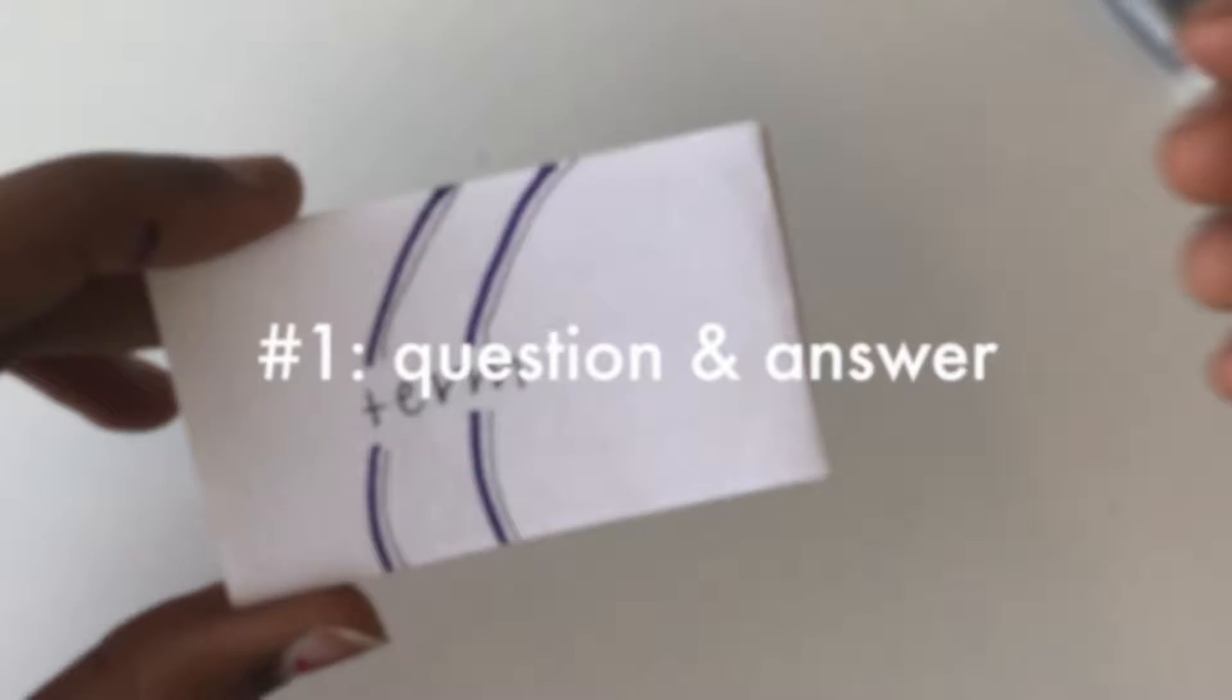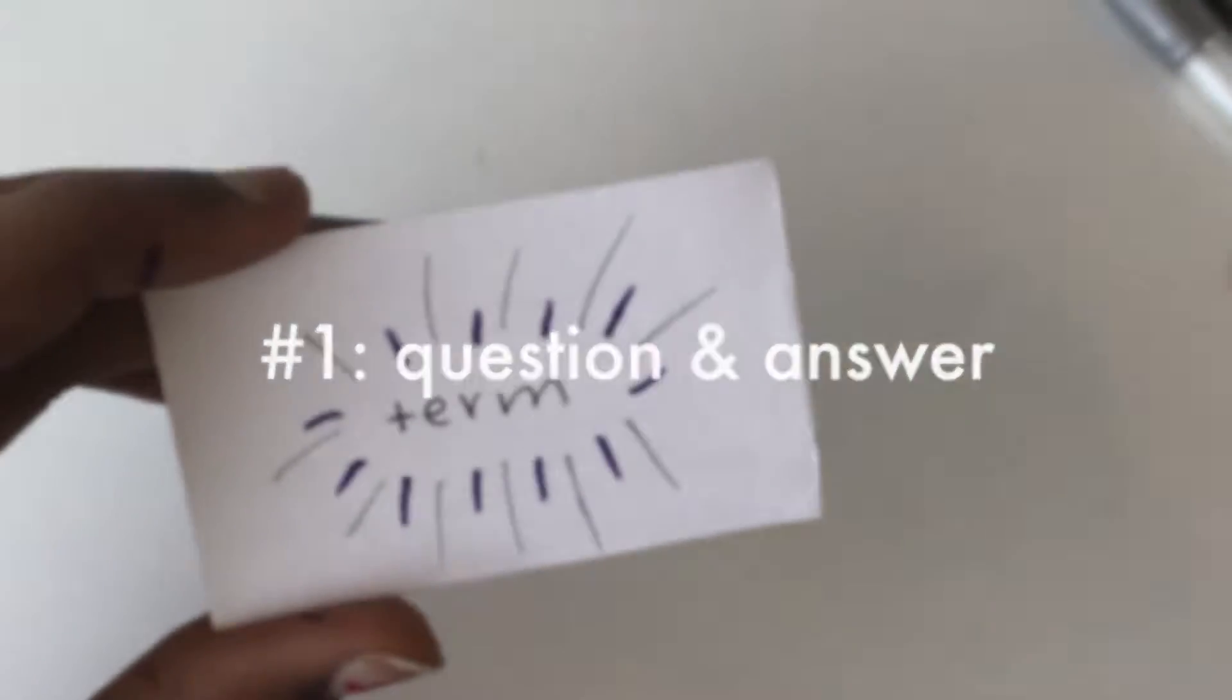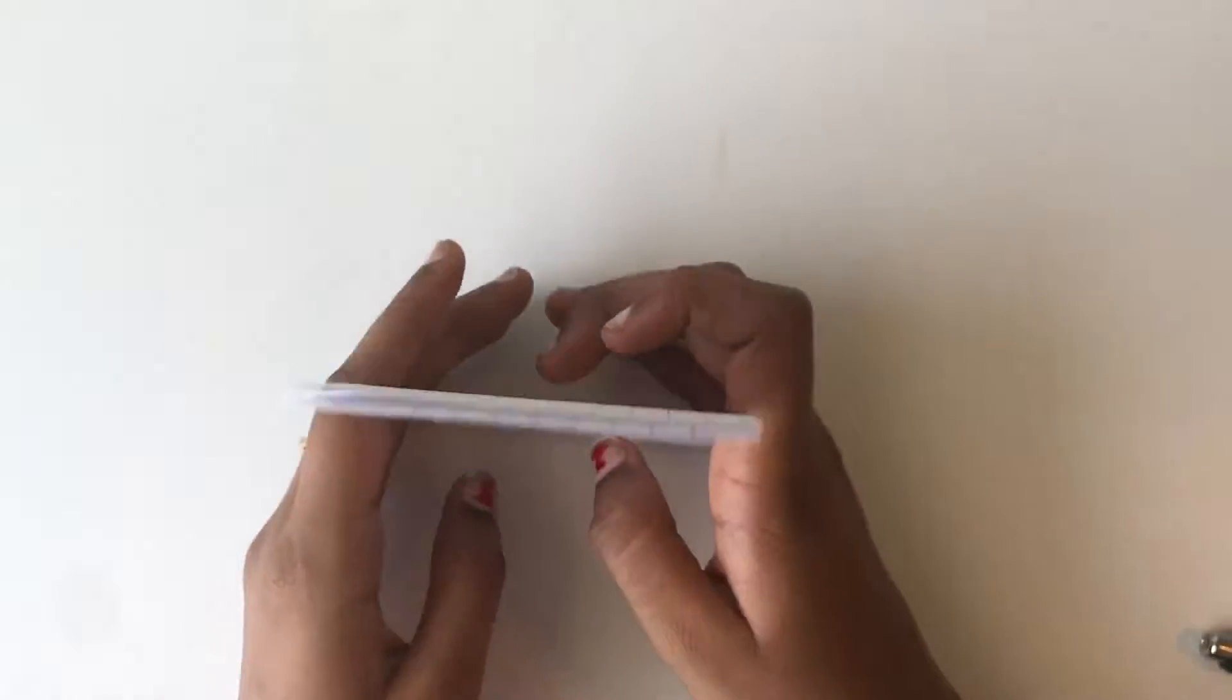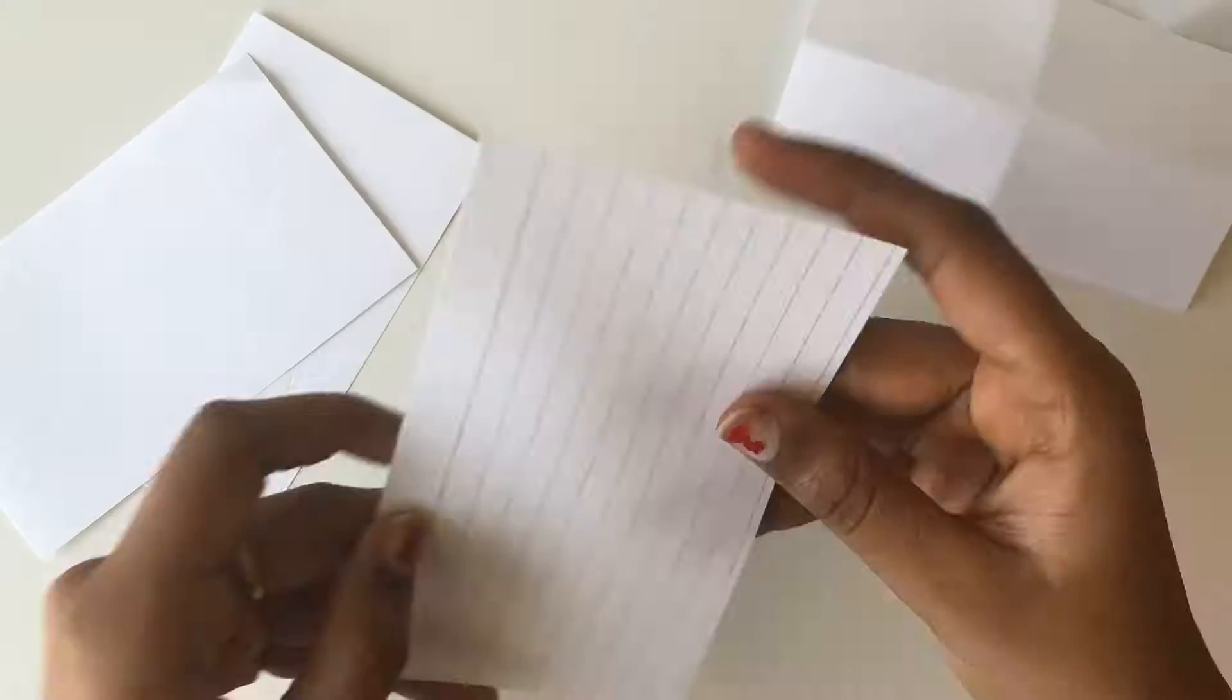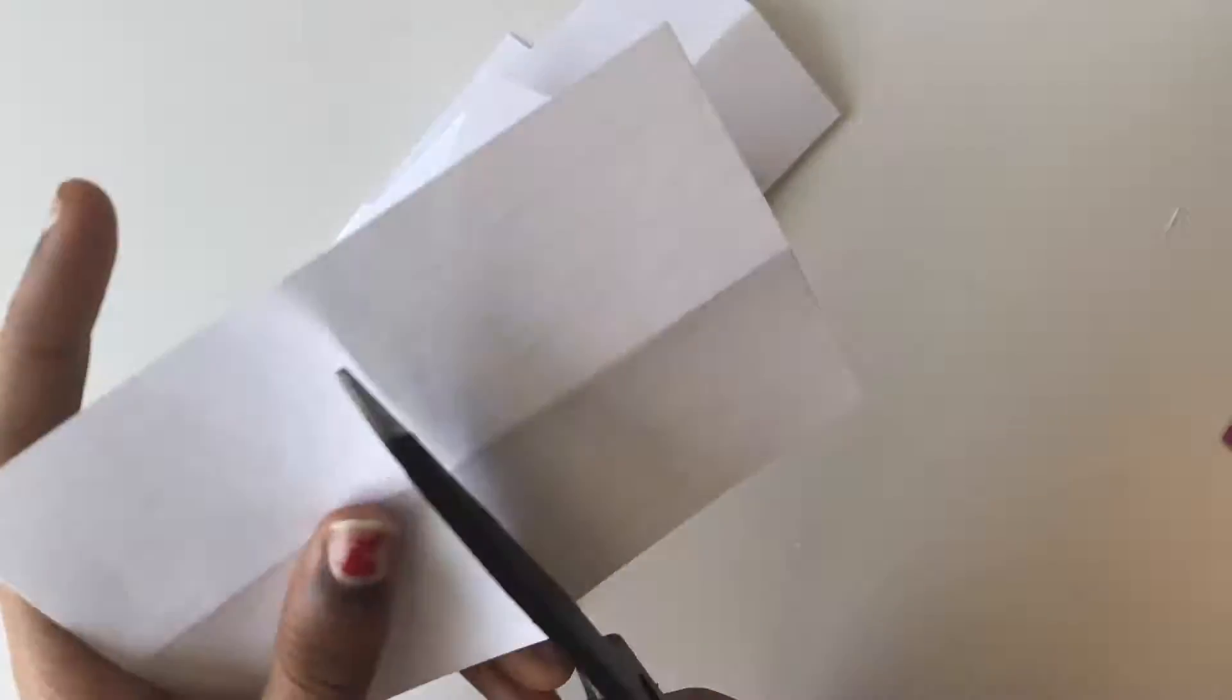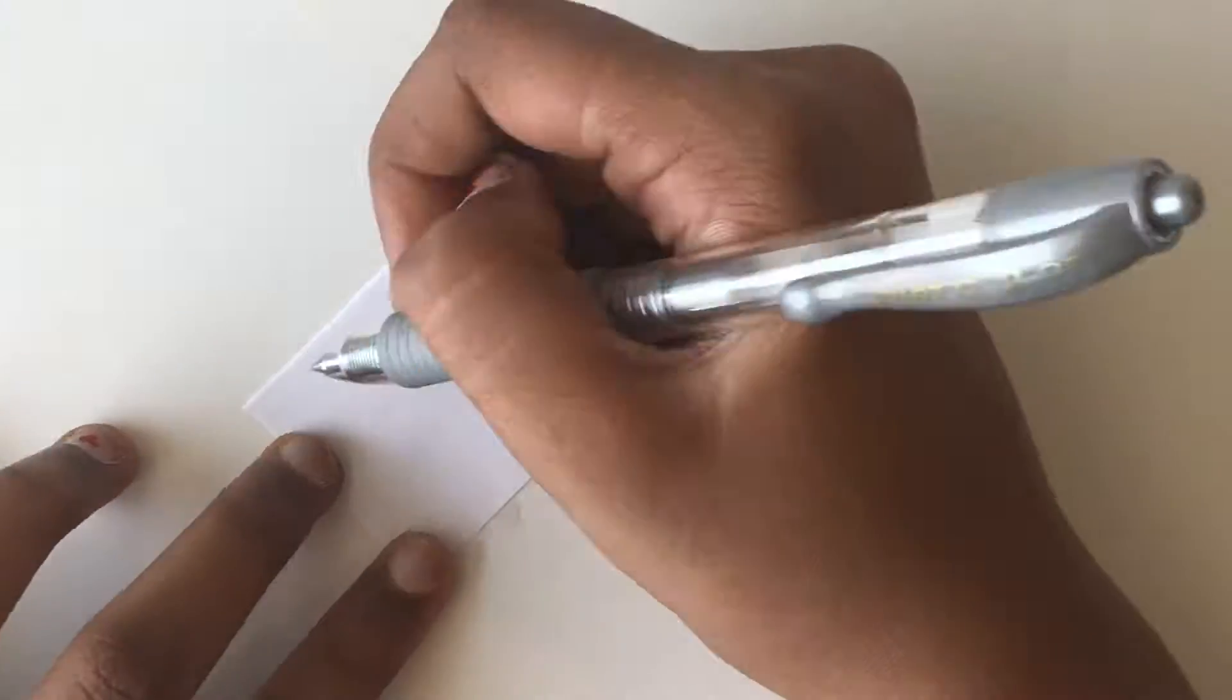The first type of flash cards I'm going to show you are what I like to call the question and answers. Essentially what these are is that you write down a vocab term on one side and then on the other side you would write the definition. This can be used for a variety of subjects, including foreign languages where you would write the term in English on one side and then the translation on the other.